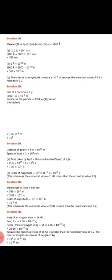Second question: size of a bacterium is 1 micron (μ). 1 micron is 10 raise to minus 6 meters. How many bacteria will fit in 1 meter? Using the unitary method: 1 bacterium = 10 raise to minus 6 meters; x bacteria = 1 meter. Cross-multiplying, 10 raise to minus 6 comes to the numerator and you get x = 10 raise to 6. So 10 raise to 6 bacteria fit in 1 meter.